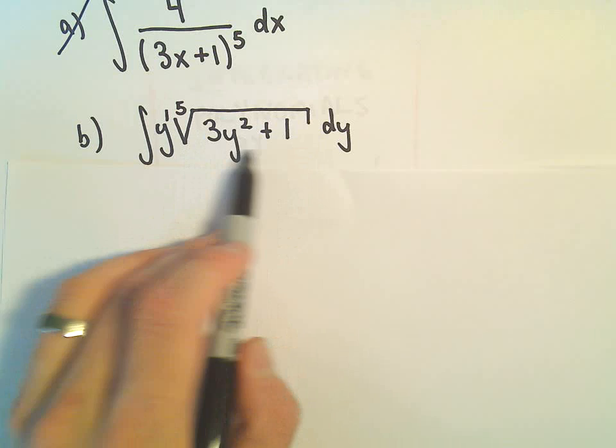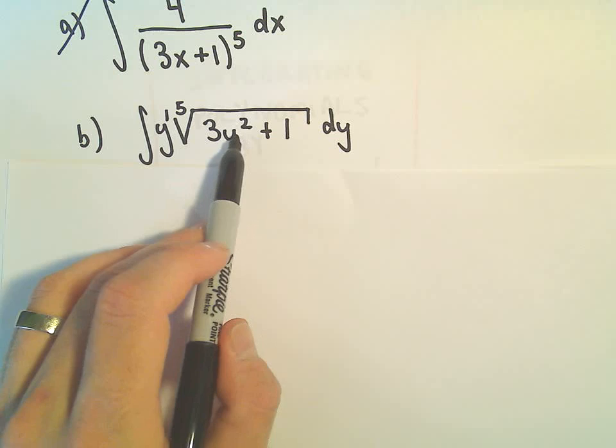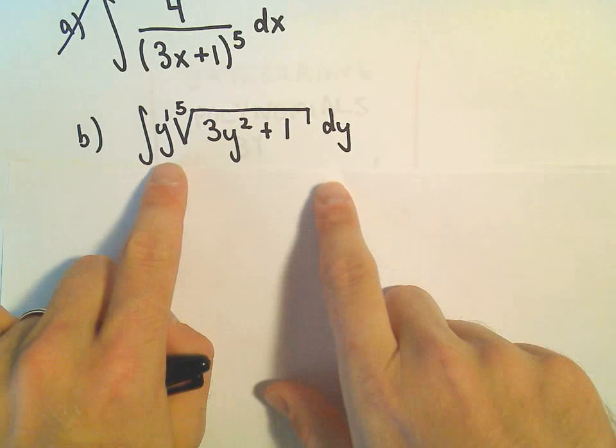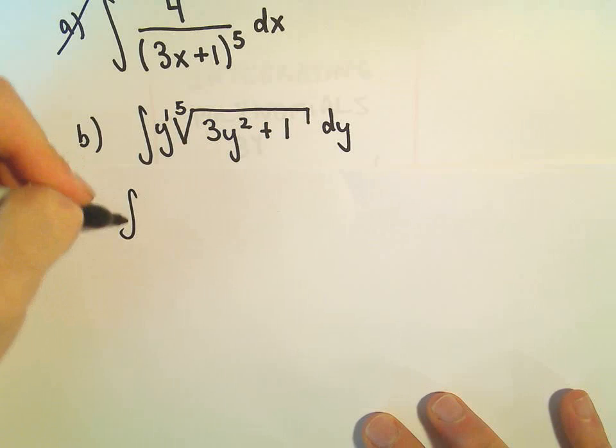Well, if I take the derivative of something involving y squared, I'm going to get like a 2y to the first power. I'll be left with a y to the first, and that's good because that's present in the problem. There is a y to the first left over. So to me, that's kind of something that clues me in that maybe a u-substitution would work.